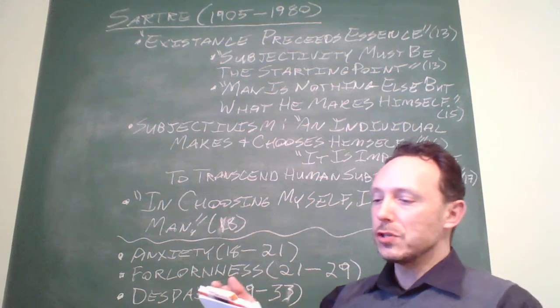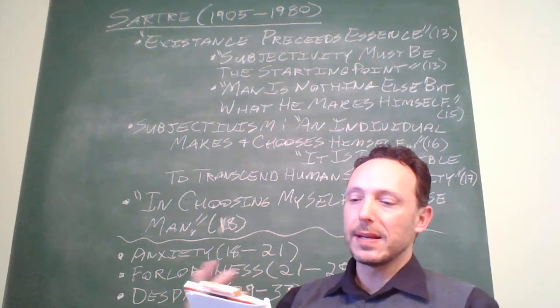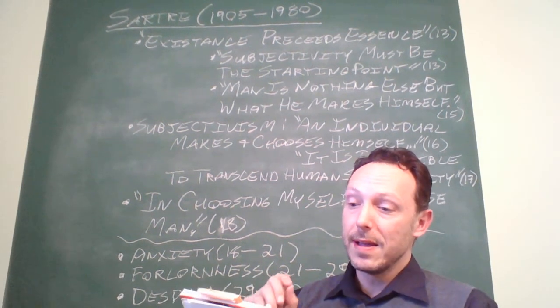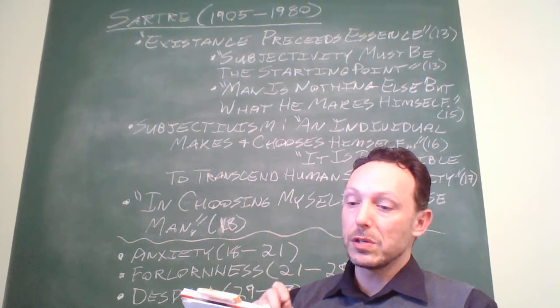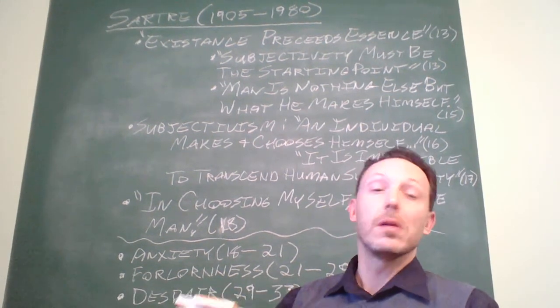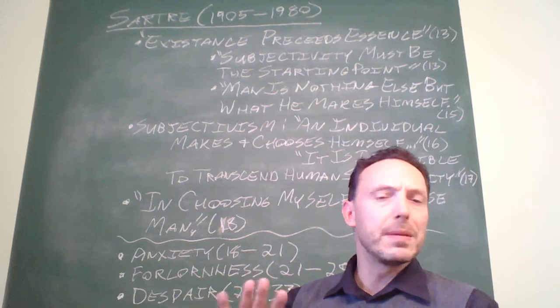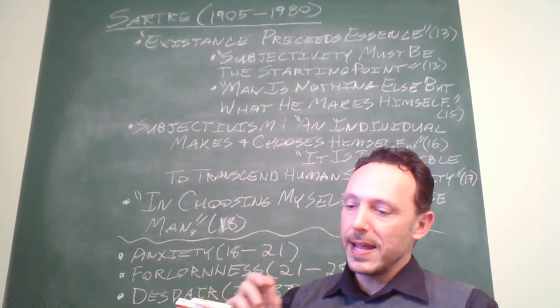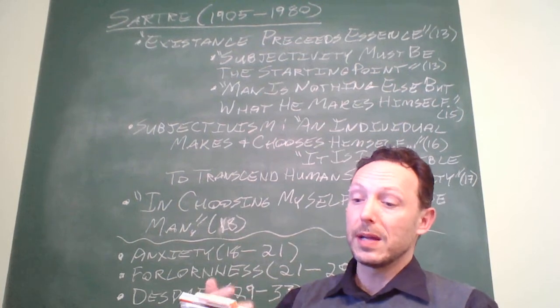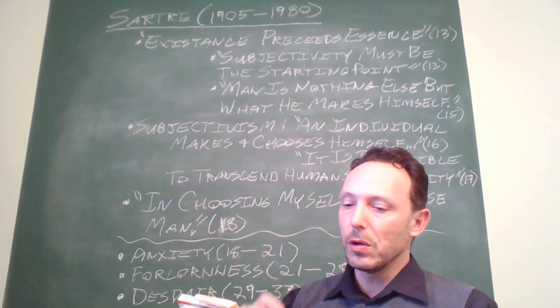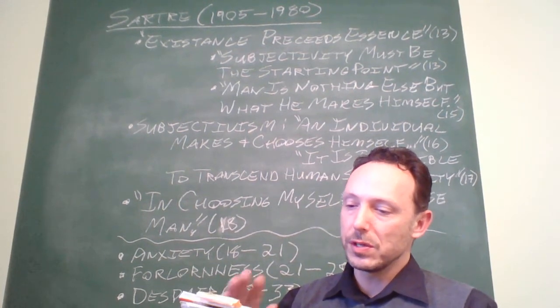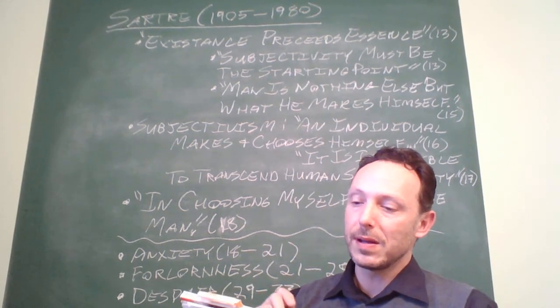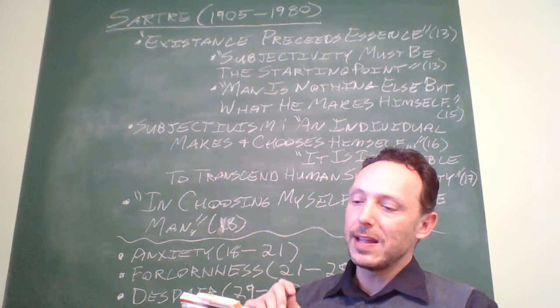When we say that man chooses himself, we mean that every one of us does likewise, but we also mean that in making this choice, he also chooses all men, all of mankind. In fact, in creating the person that we want to be, there's not a single one of our acts which does not at the same time create an image of humankind as we think he ought to be.